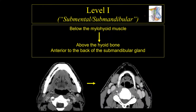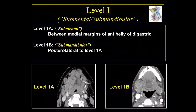Level 1 lymph nodes are located below the chin, sometimes referred to as the submental or submandibular lymph nodes. They extend from the mylohyoid muscle down to the hyoid bone. If we draw a line connecting the back of the submandibular glands, everything anterior to that line is level 1, and everything posterior is a different classification.